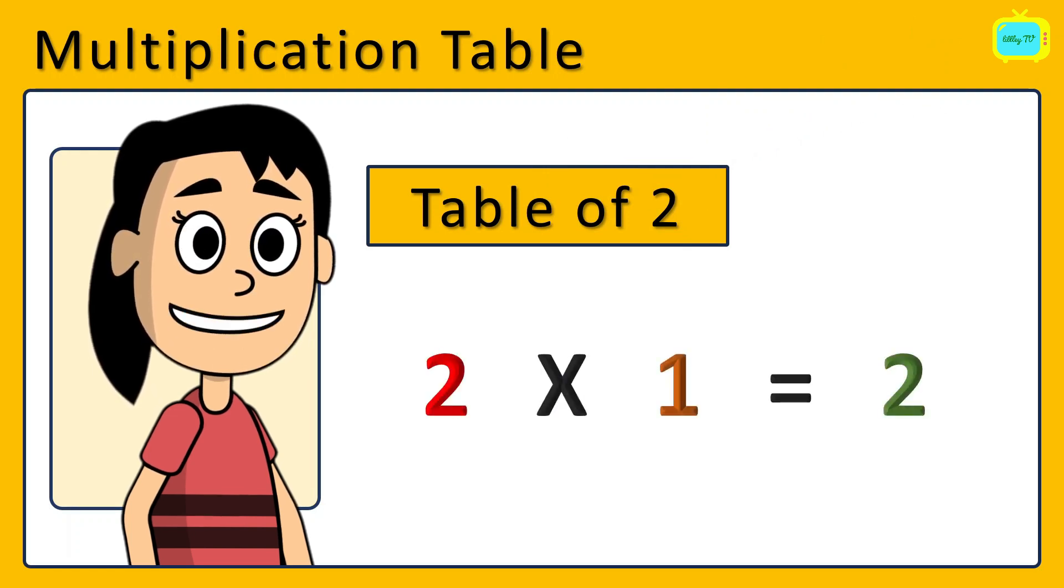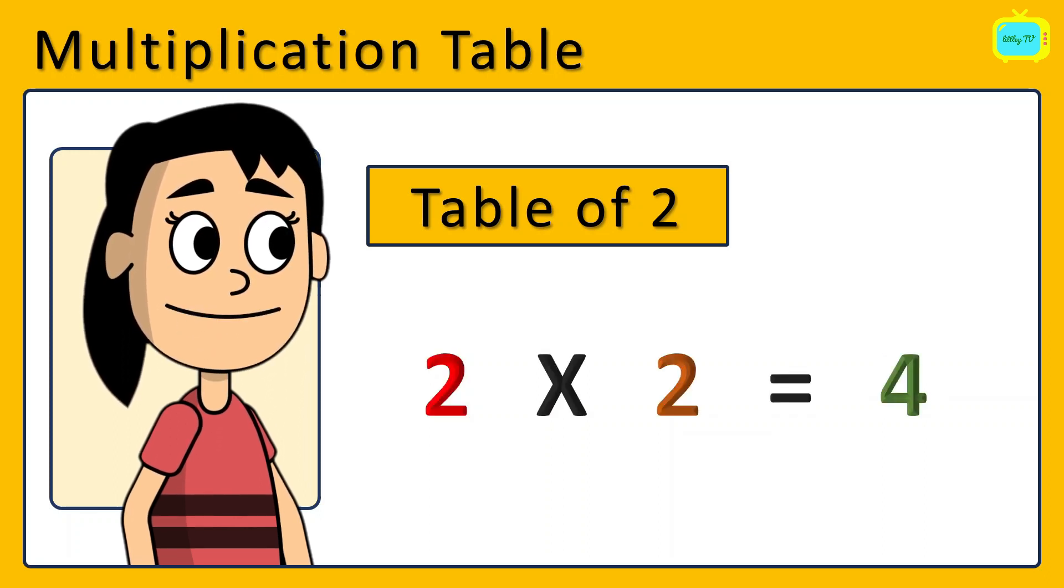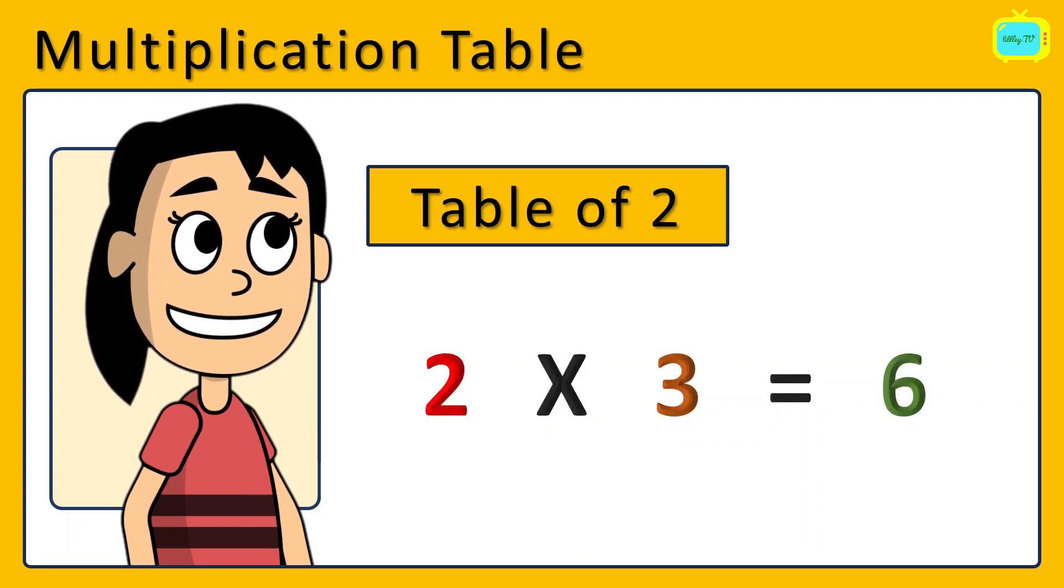2 times 1 is 2. 2 times 2 are 4. 2 times 3 are 6.